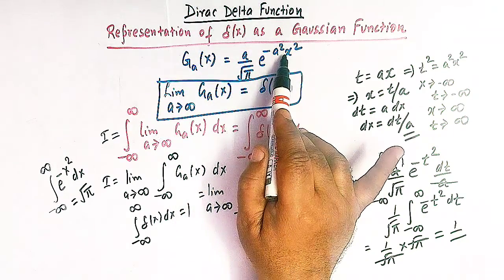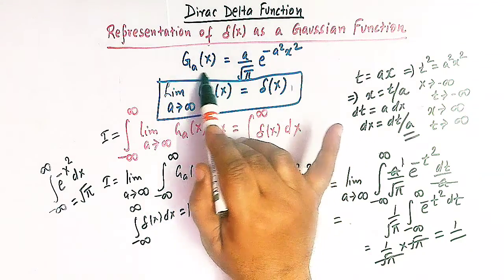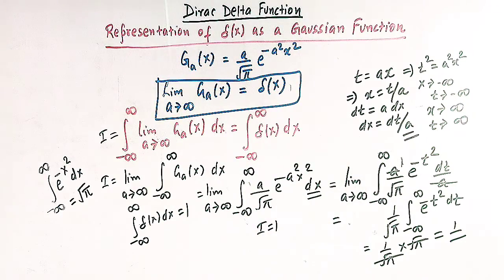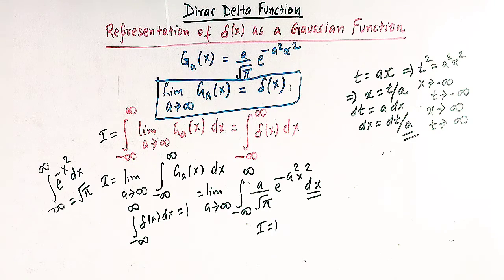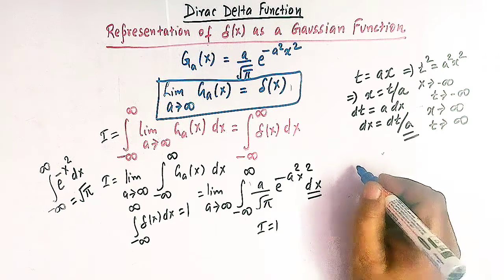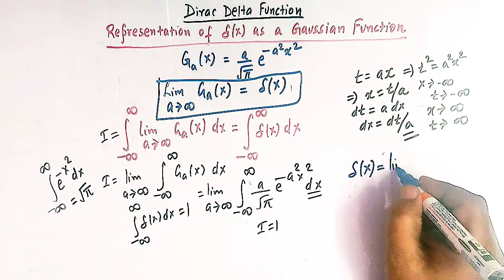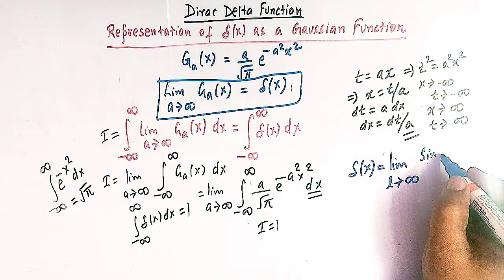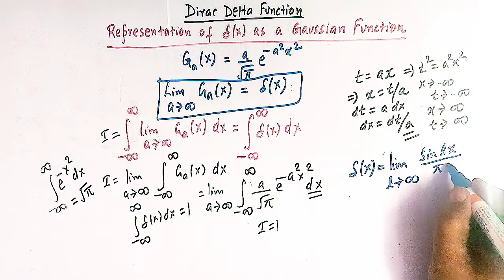In our earlier video, we expressed the Dirac delta function in terms of another function, and in this lecture we have expressed the famous Dirac delta function as a Gaussian function. In our next video, we will see that the Dirac delta function may also be written as the limit as l tends to infinity of sine(lx) over pi x. This limit also represents the Dirac delta function.